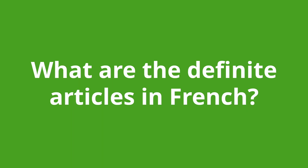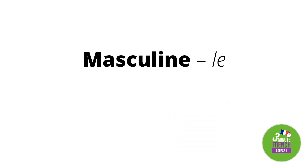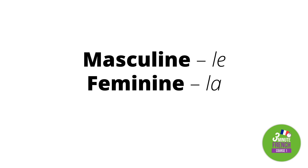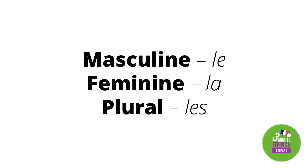What are the definite articles in French? In French, there are three definite articles: a masculine version, a feminine version, and a plural version. The masculine is 'le', the feminine is 'la', and the plural is 'les'.